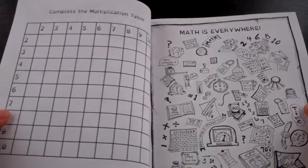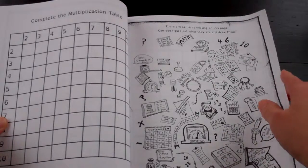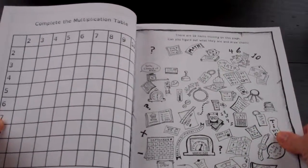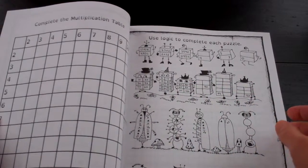Complete the multiplication table. Math is everywhere. Ten missing items on this page. Can you figure out what they are? So we're just completing multiplication tables here.